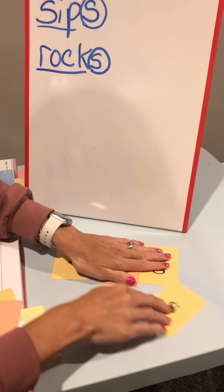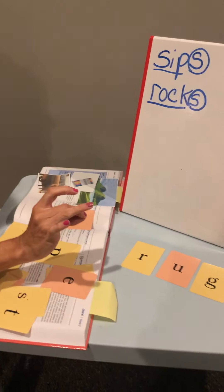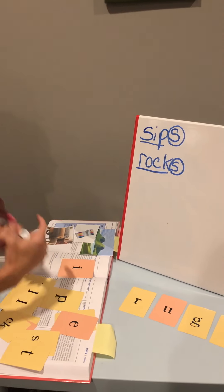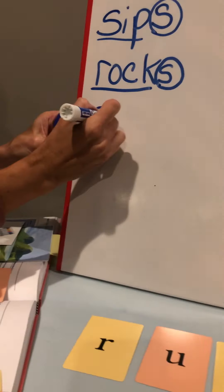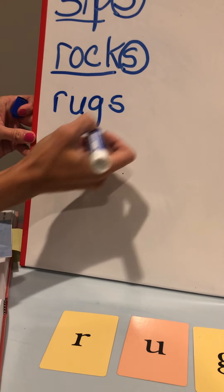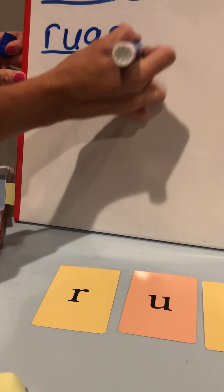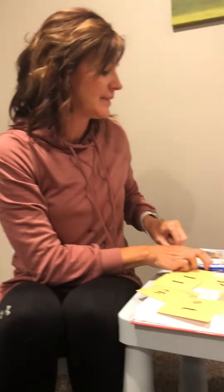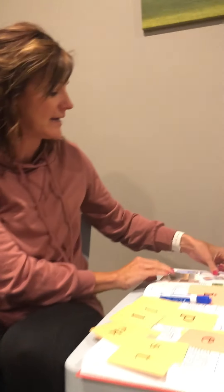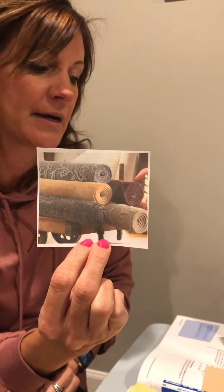First job is to tap it out. Here we go: rugs. Write it in here and mark it up. We underline the base word, circle the suffix. Now this one is not a verb — this one means more than one, like we had before. Rugs: more than one rug.